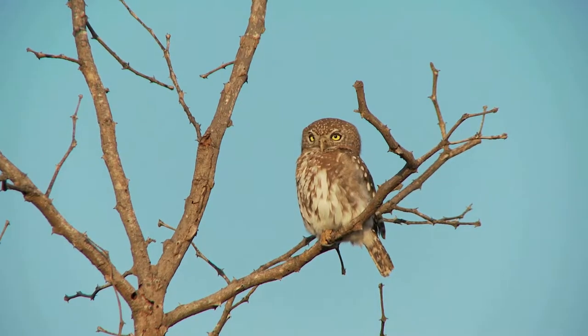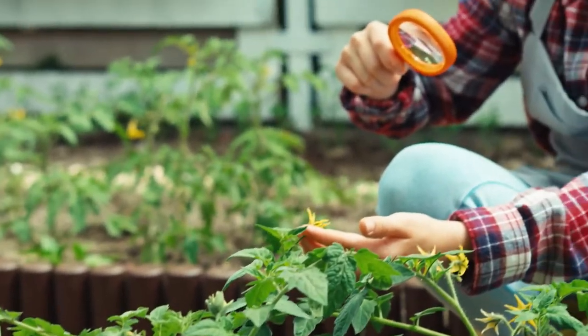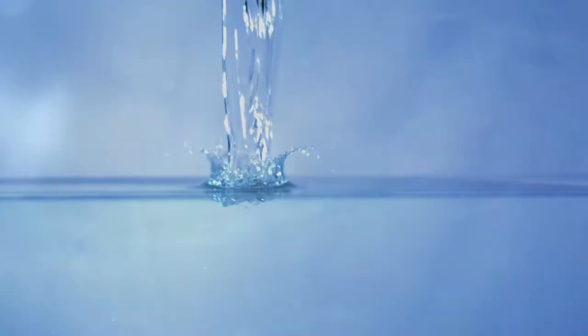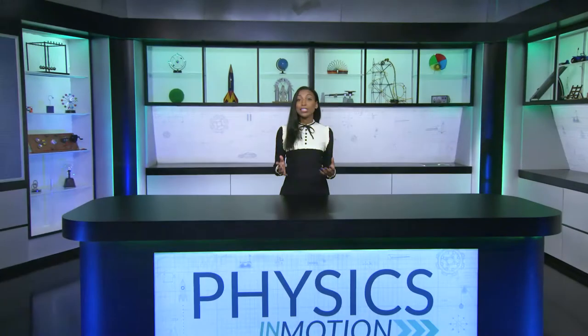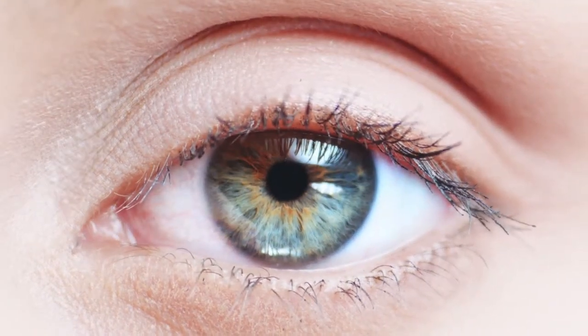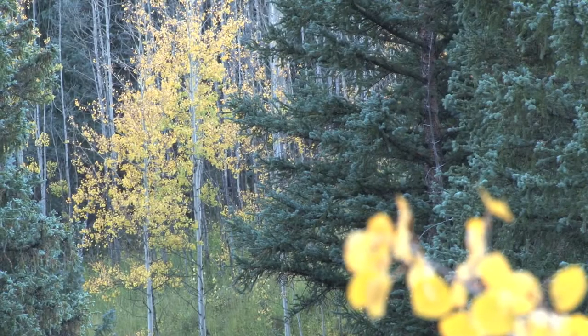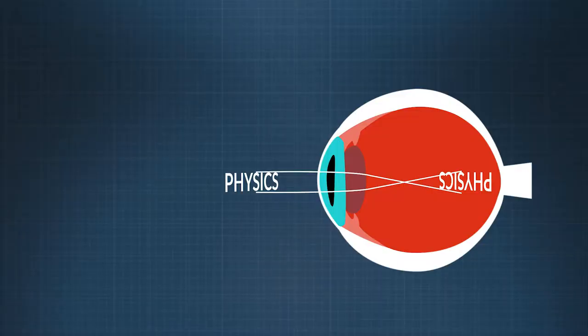Lenses are everywhere — in anything that has eyes, in microscopes and cameras, telescopes, magnifying glasses, as well as car headlights. A lens is any transparent material with a curved surface, even a droplet of water. The lens in your eye is capable of changing focus from the micro to the macro, literally in the time it takes to blink. That's an incredible miracle of evolution — no other lens has the flexibility and response time. Your eyes can do this because they have flexible lenses controlled by muscles that can bulge in and out, changing shape in an instant.